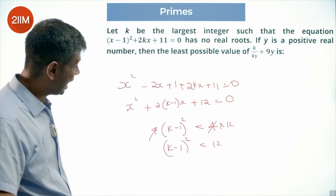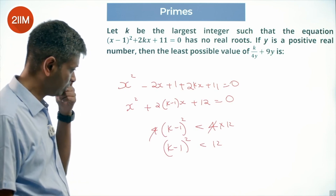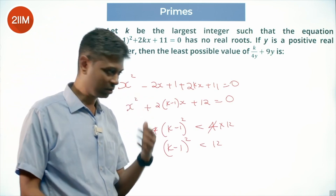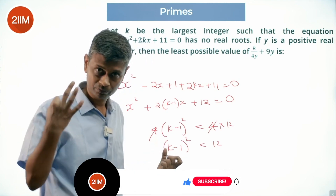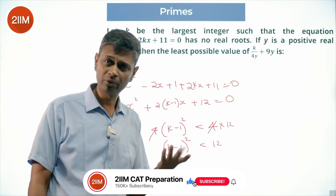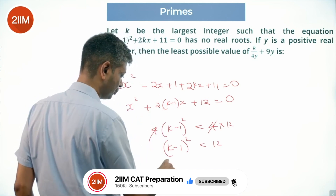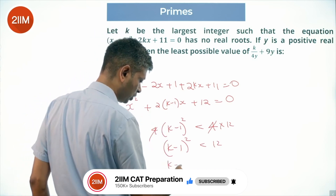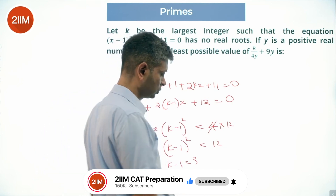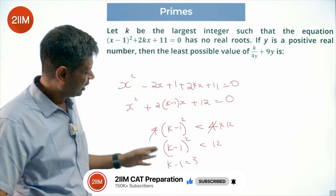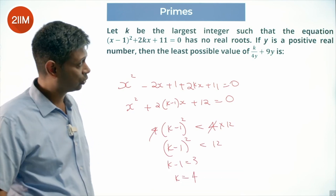k is the largest integer such that this works. Thinking about positive integers: k minus 1 could be 3, but k minus 1 should not be 4, since 4 squared is 16 and 3 squared is 9. So k minus 1 equals 3, meaning k equals 4. We don't worry about k being negative since we want the largest integer. So k equals 4.